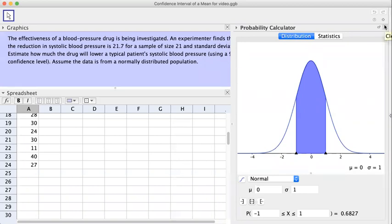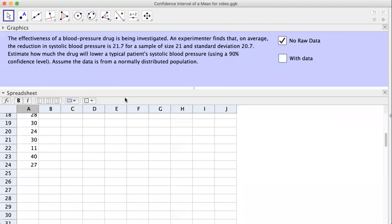Let's do the problem like this: The effectiveness of a blood pressure drug is being investigated, and an experimenter finds that on average the reduction in systolic blood pressure is 21.7 for a sample of size 21 and standard deviation is 20.7.